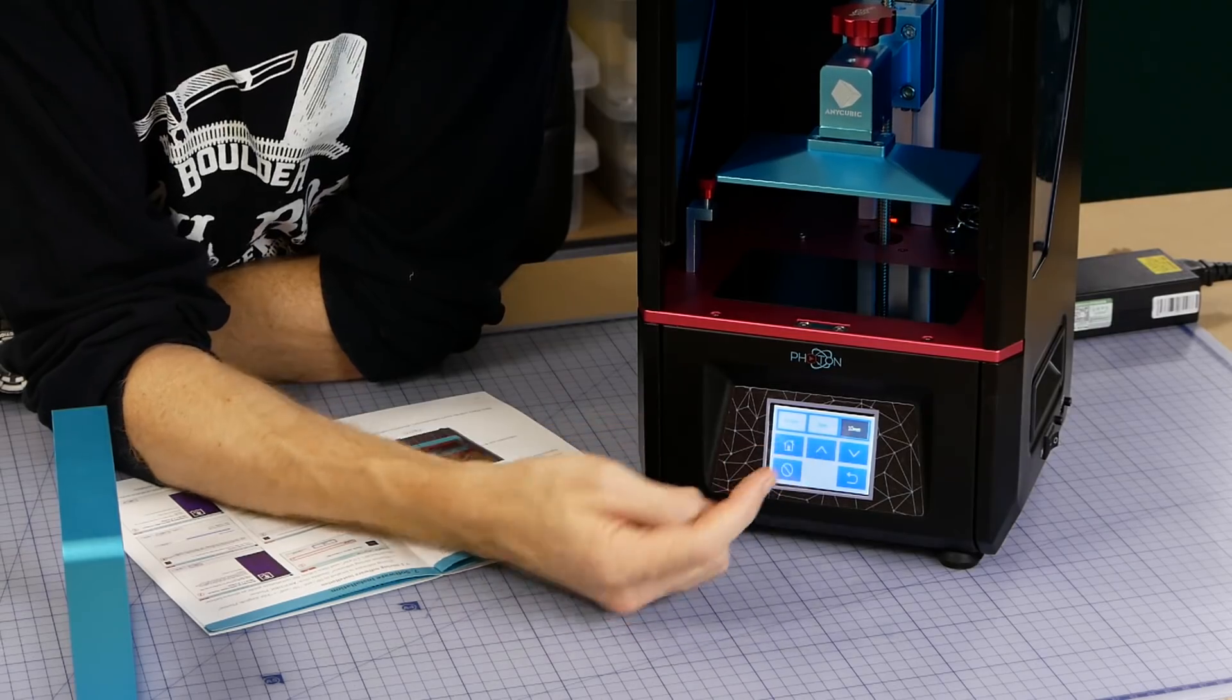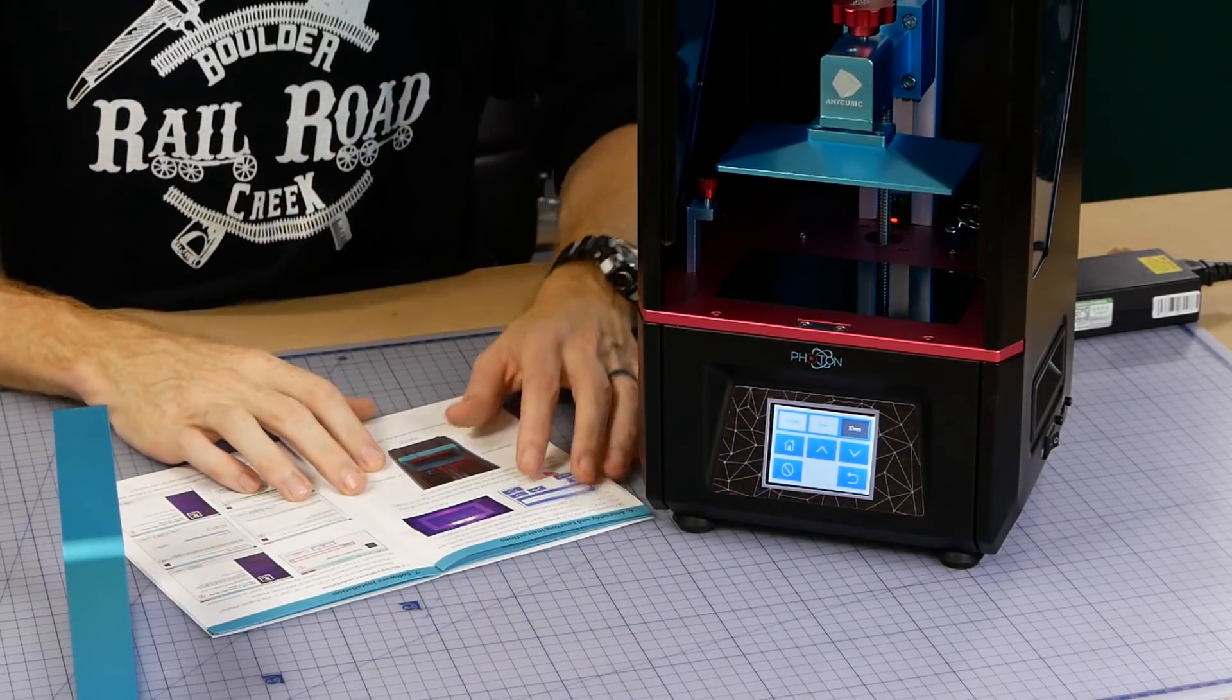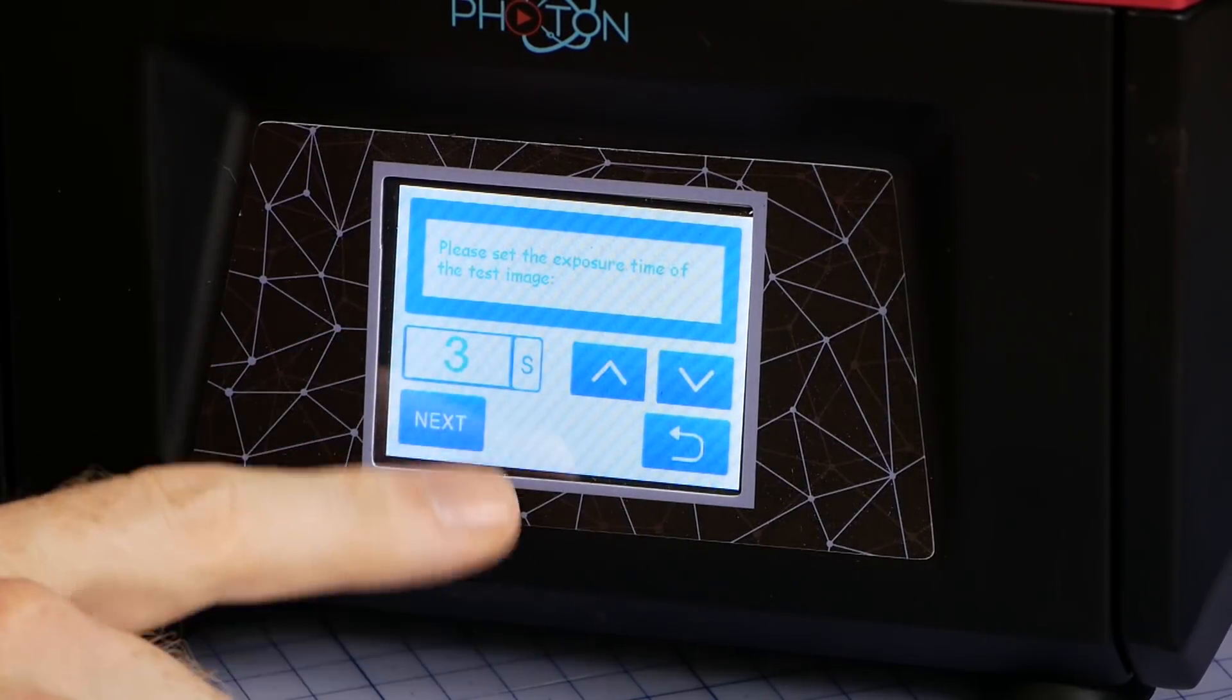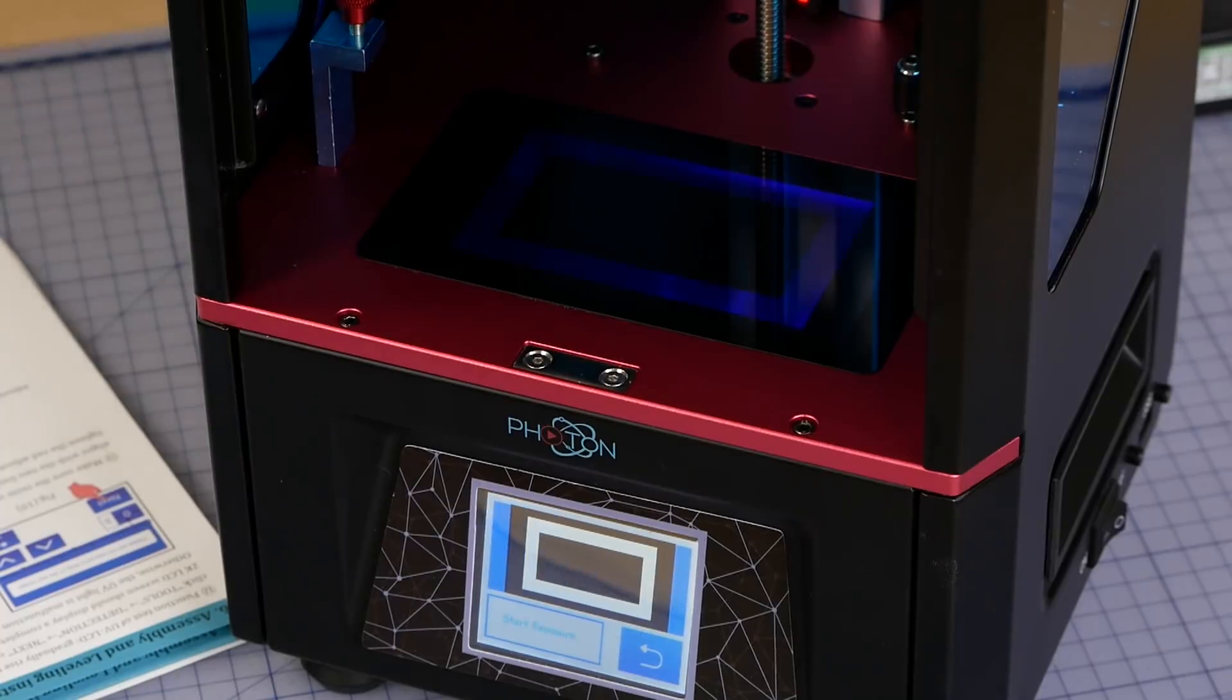Just to make sure everything is going to work properly we give the LCD screen and UV light a test. If the picture on the display matches what you can actually see on the LCD screen then you know everything is working correctly.